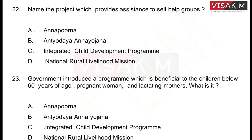Name the project which provides assistance to self-help groups. The options are: A) Annapurna, B) Andhiyodhe Annayojana, C) Integrated Child Development Program, D) National Rural Livelihood Mission. The correct answer is option D, National Rural Livelihood Mission.